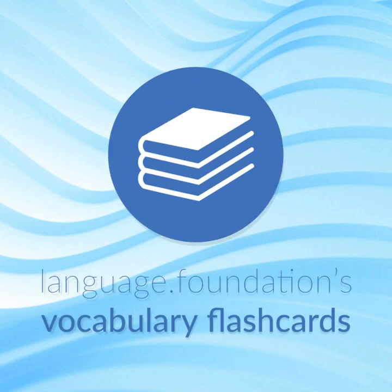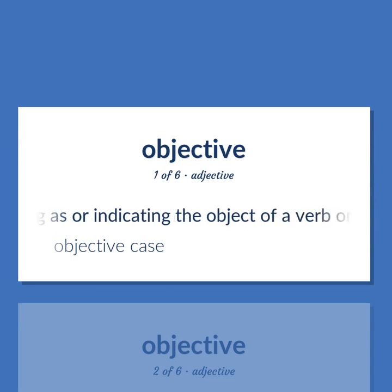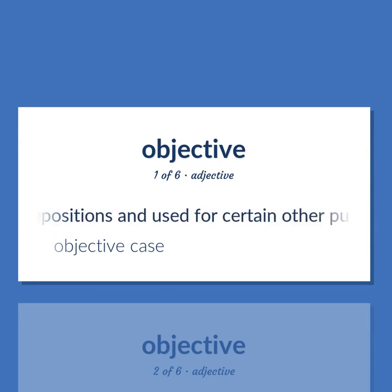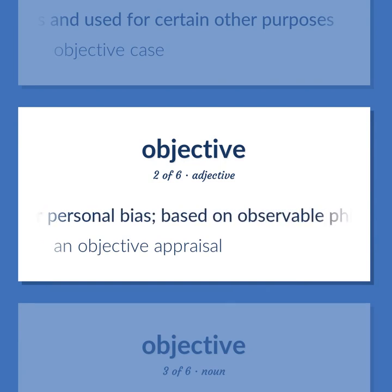Language Foundations Vocabulary Flashcards — helping you achieve understanding. Objective: serving as or indicating the object of a verb or of certain prepositions, and used for certain other purposes. Objective case. Undistorted by emotion or personal bias, based on observable phenomena. An objective appraisal.